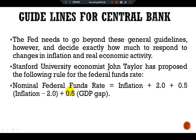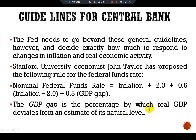The Taylor Rule states that the nominal federal funds rate equals inflation plus 2 plus 0.5 times (inflation minus 2) plus 0.5 times the real GDP gap. The GDP gap is the percentage by which real GDP deviates from an estimate of its natural level. Consistent with our dynamic aggregate demand and aggregate supply model, the GDP gap is positive if GDP rises above its natural level and negative if it falls below that level.